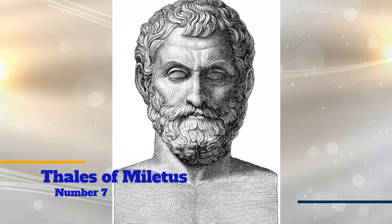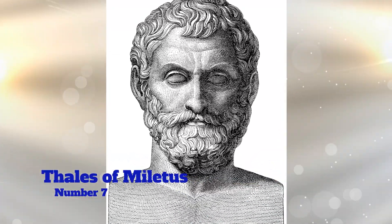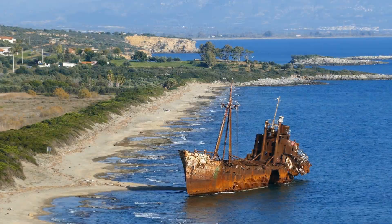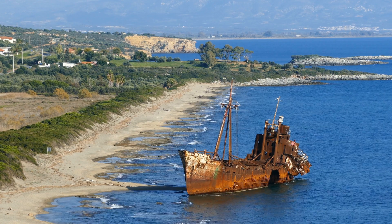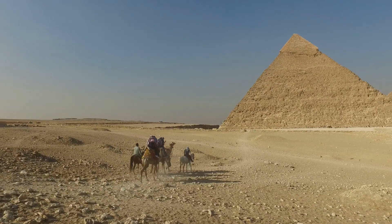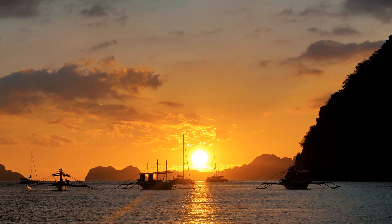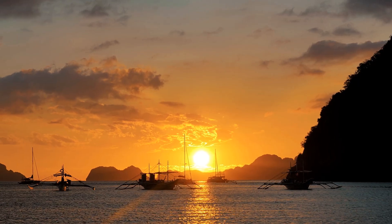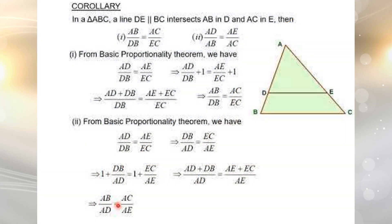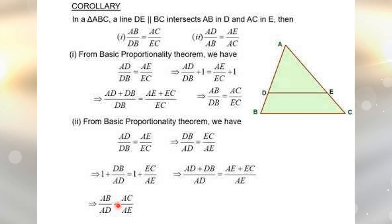Number 7: Thales of Miletus. Thales of Miletus was a Greek mathematician and astronomer. In mathematics, Thales used geometry to calculate the heights of pyramids and the distance of ships from the shore. He is the first known individual to use deductive reasoning applied to geometry, by deriving four corollaries to Thales' theorem.